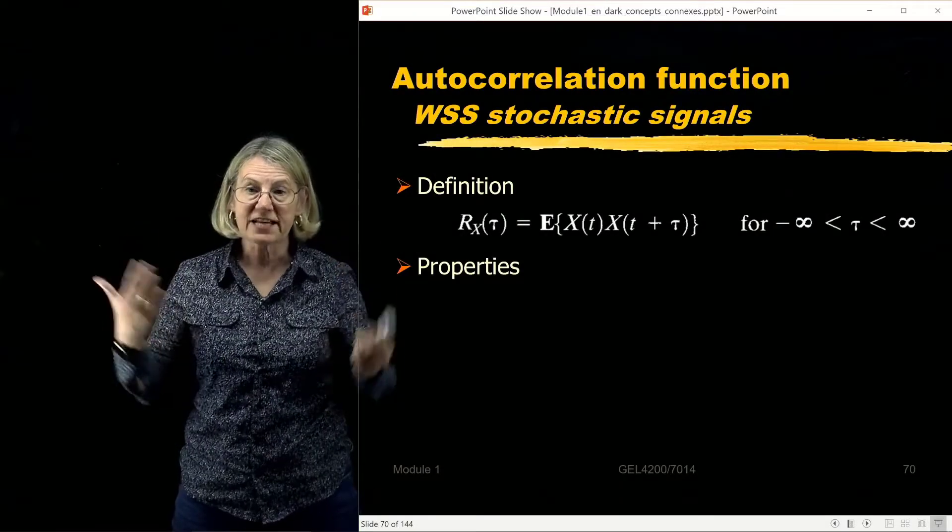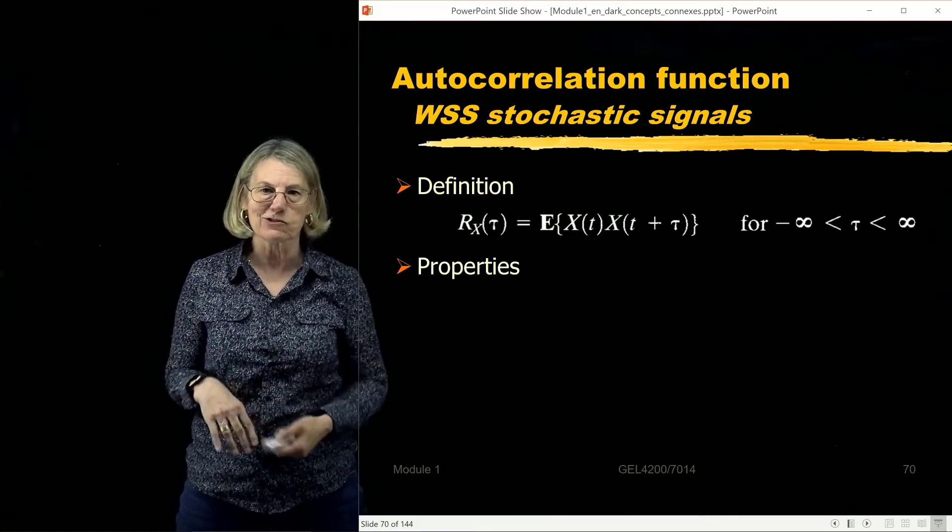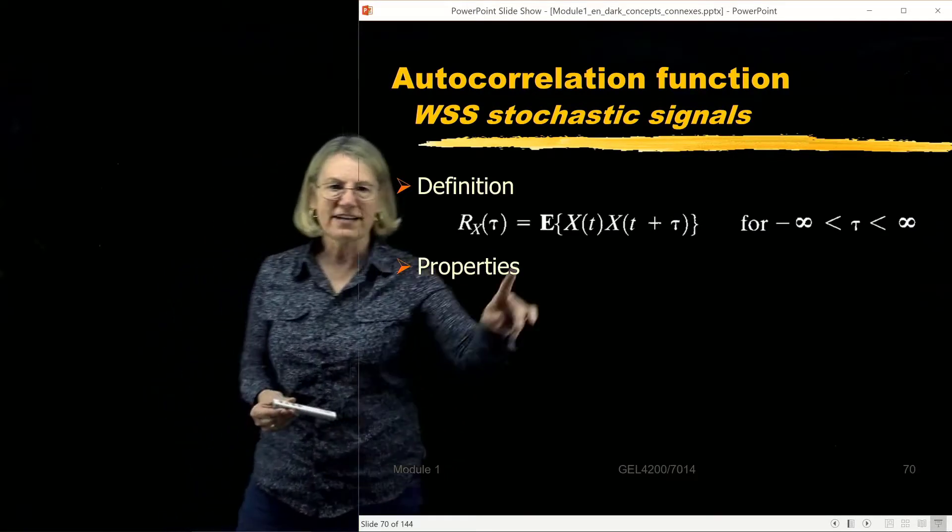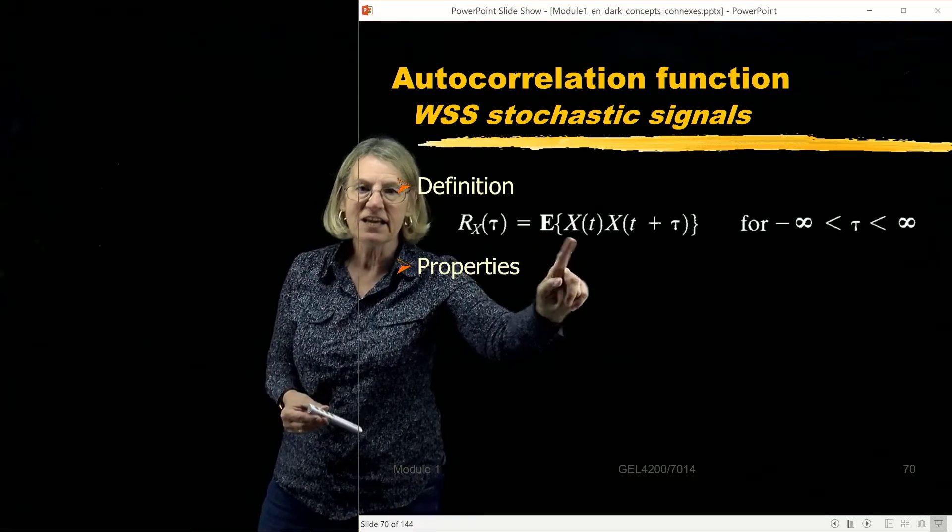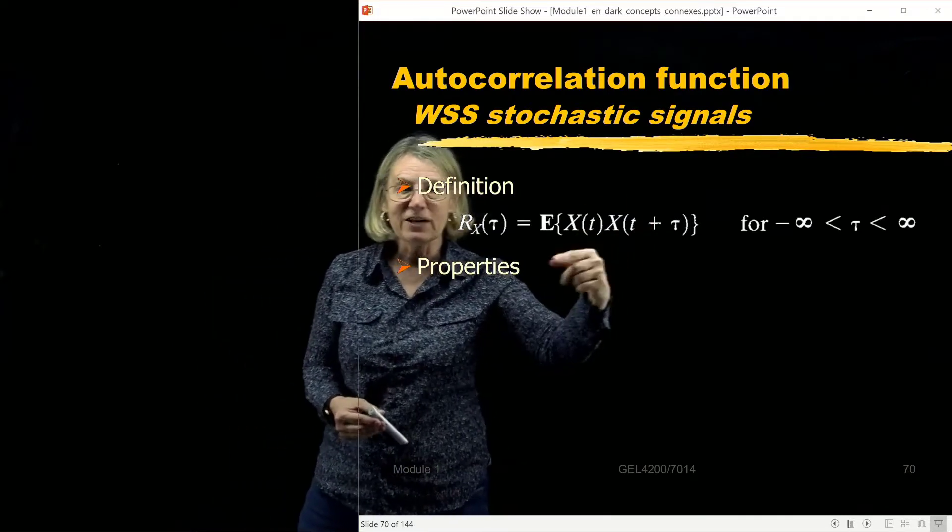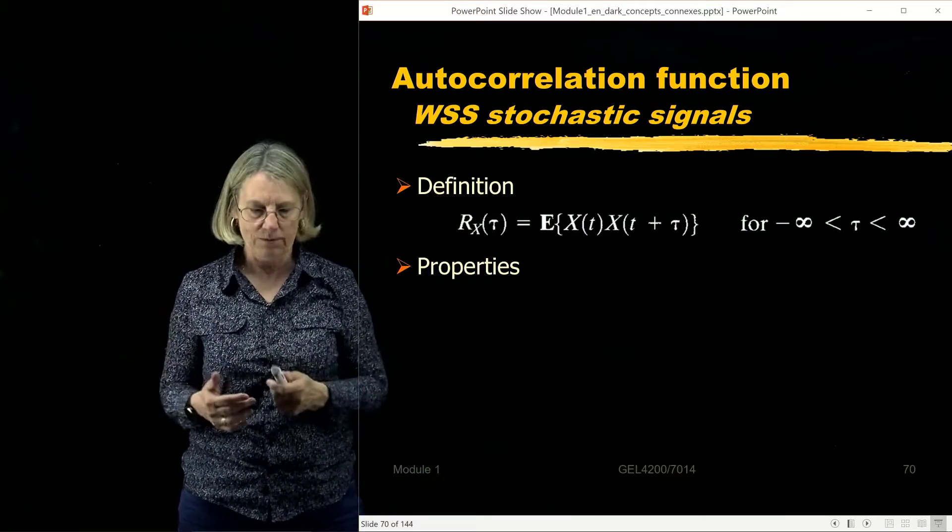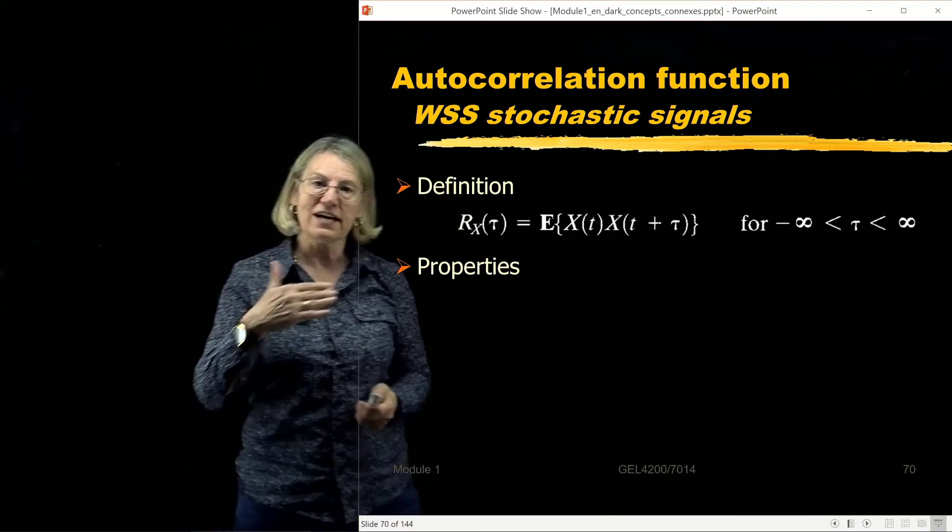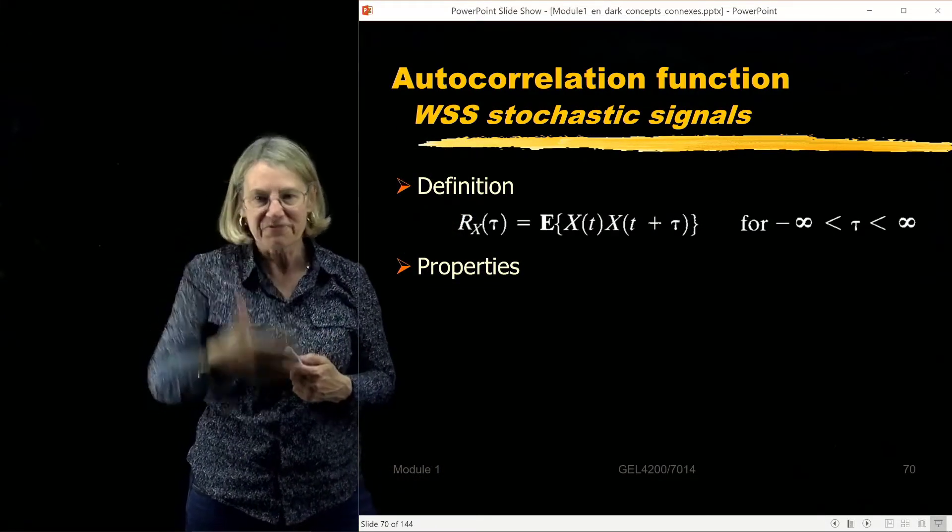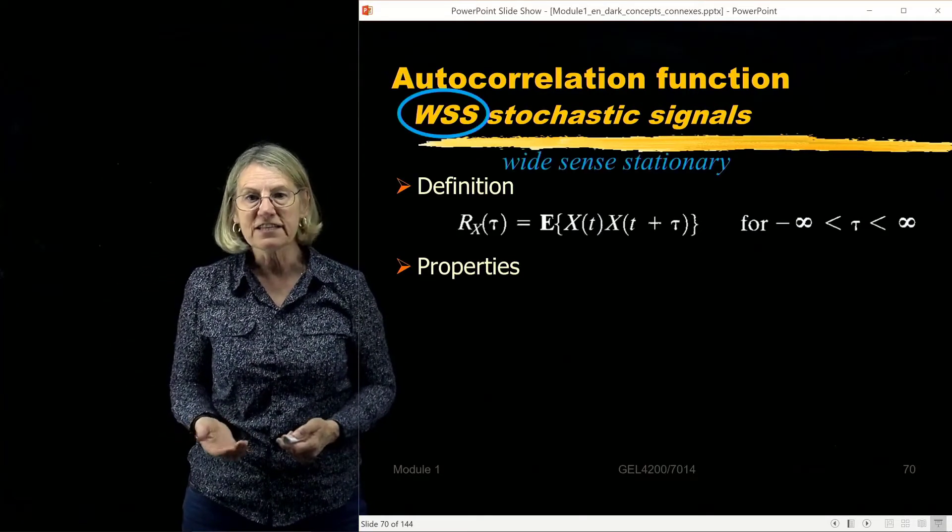So for these subsets of all random processes, which is the subset of wide-sense stationary stochastic signals or random processes, in this case we have a definition of the autocorrelation function which is well defined as the expectation of X(t) times X(t + τ). And in the end, it doesn't matter which value of t I use, because when I take this expectation operator, I'm just going to get a function that's only a function of tau. So given that this is the definition of the autocorrelation function, just from this definition there are several properties that sort of fall out.